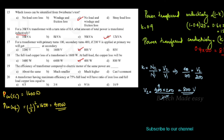The efficiency of a transformer compared to an electric motor of the same power — the options are: about the same, much smaller, much higher, or can't comment. The efficiency of a transformer is much higher than that of an electric motor of the same power.